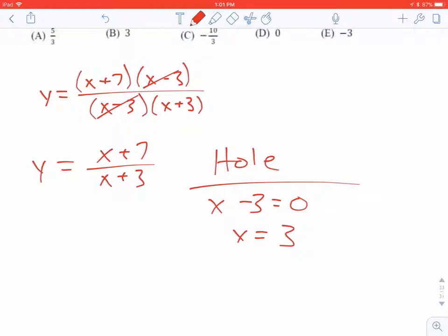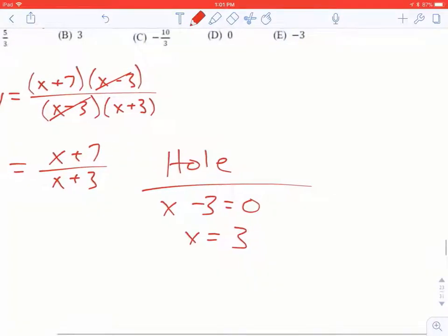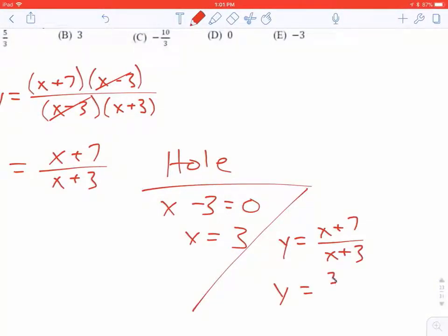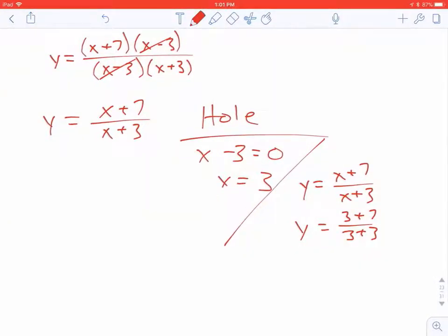To find the y coordinate of your hole, we're going to plug in to what's left of the function. y equals x plus 7 over x plus 3. Plug in 3. And you end up with 10 over 6 as the y value of the hole, which is the same as 5 thirds. This has a hole at 3, 5 thirds.